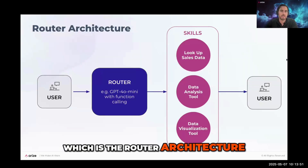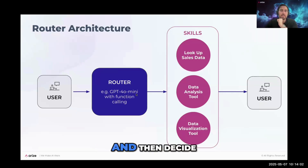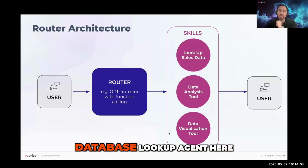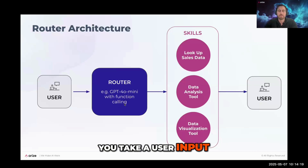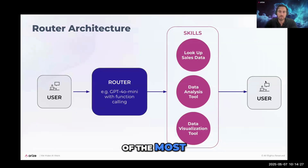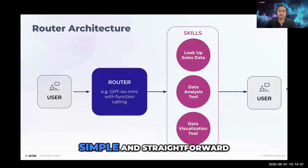The first and most basic is the router architecture — using a pure router where for a given input you call an LLM or classification model and decide to go down one of several skill paths. In this example it looks like a database lookup copilot that can look up data, analyze data, and visualize data. You take a user input, go down one of those skills, complete it, and return the output to the user.